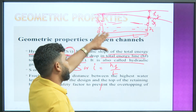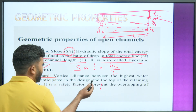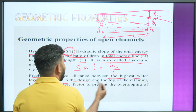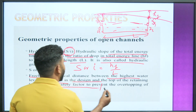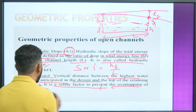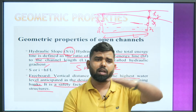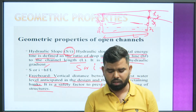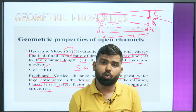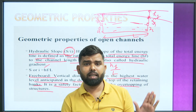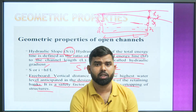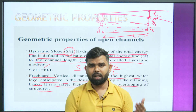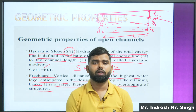Freeboard — it is the vertical distance between the highest anticipated water level in the design and the top of the retaining banks. It is a safety factor to prevent overtopping of structures. If water is at full level or overflowing, freeboard provides the criteria for safety. These are our geometric properties of open channels — prepare all these terms and we will continue in the next lecture.